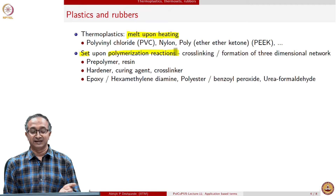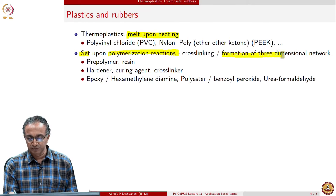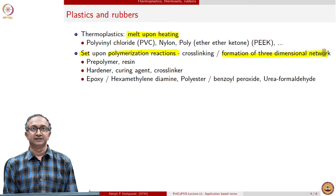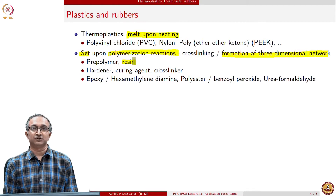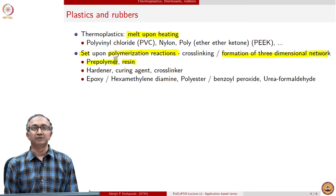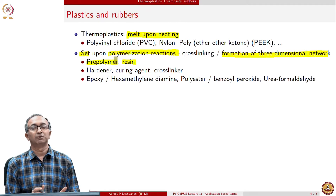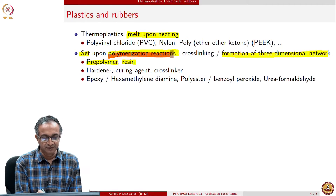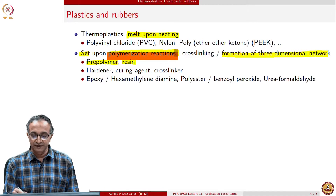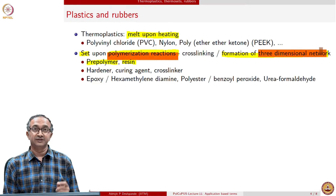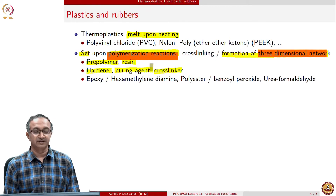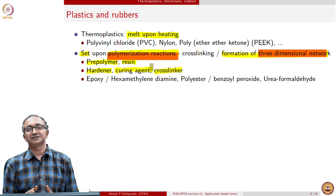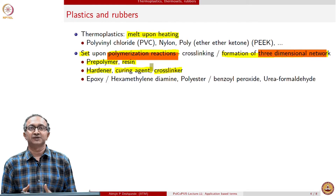Once a thermoset is set, we cannot melt it again. So recycling of thermosets is a challenge because there is formation of a three-dimensional network in the thermoset resin. This liquid form before setting is called a resin or pre-polymer, implying that the molar mass of macromolecules is small, and only when polymerization reactions happen does the molar mass build up, eventually leading to a three-dimensional network. To get this three-dimensional network, we need a crosslinker, also referred to as a curing agent.